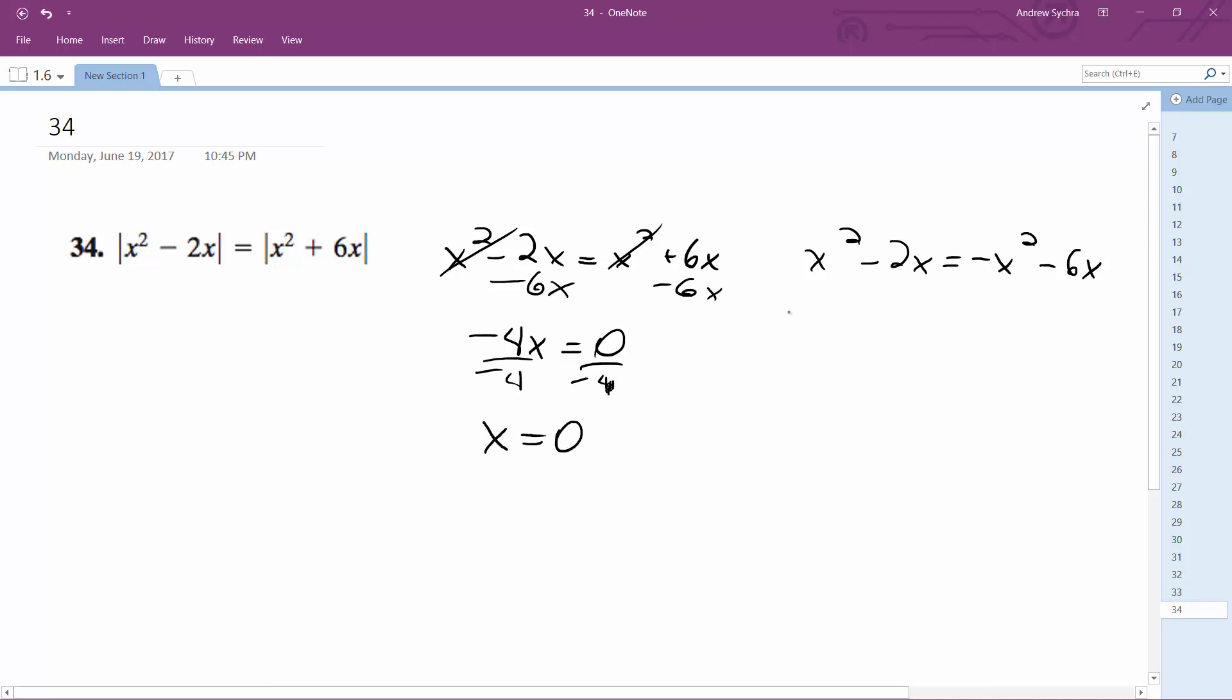Over here, we get 2x squared, and then add, so that's adding x, and then add 6x, so we end up with plus 4x. So factor out, equals 0, and then we can divide through by 2, so we get x squared plus 2x equals 0.